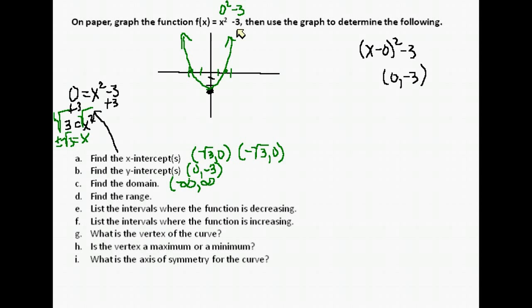For the domain: quadratic functions have no fractions and no radicals, so our domain is all real numbers, negative infinity to infinity. The range, on the other hand, we have to look at the graph. This parabola opens upward from -3 up, so our range starts at -3 — including that number — with a square bracket, and goes up to infinity.